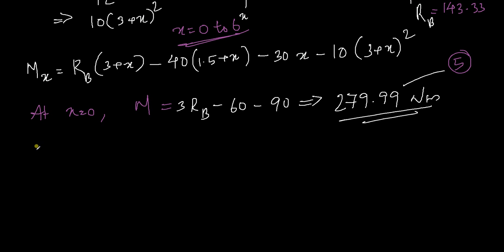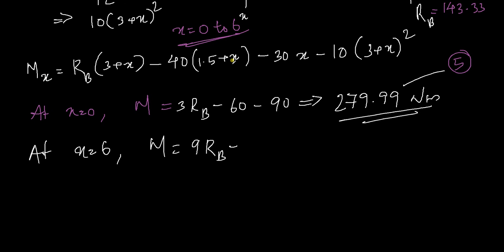Now for the last one, at x = 6: (3 + 6) = 9, so the equation becomes 9RB minus (6 + 1.5) times 40, which is 7.5 times 40 = 300. Then minus 30 times 6 = 180. Then the UDL term: (6 + 3) = 9, 9 squared = 81, times 10 = 810.